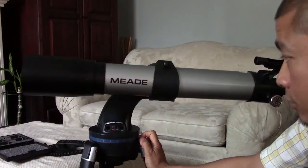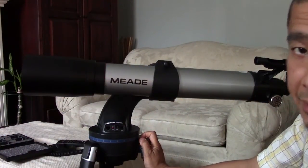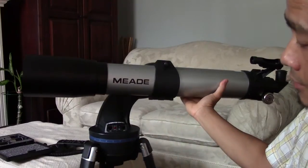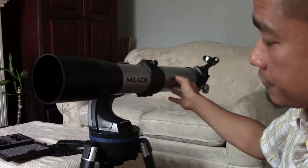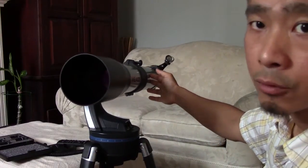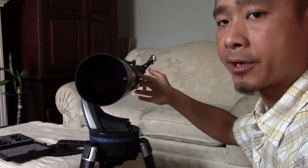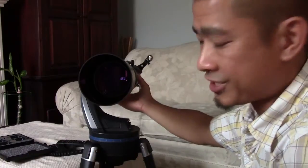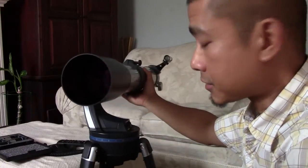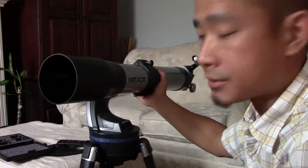Now this telescope has a focal length of 800 millimeters and an aperture diameter of 90 millimeters, giving it a focal ratio of 8.8. That would be considered a slow focal ratio, which isn't a bad thing. It just means it's going to be more forgiving on eyepieces.